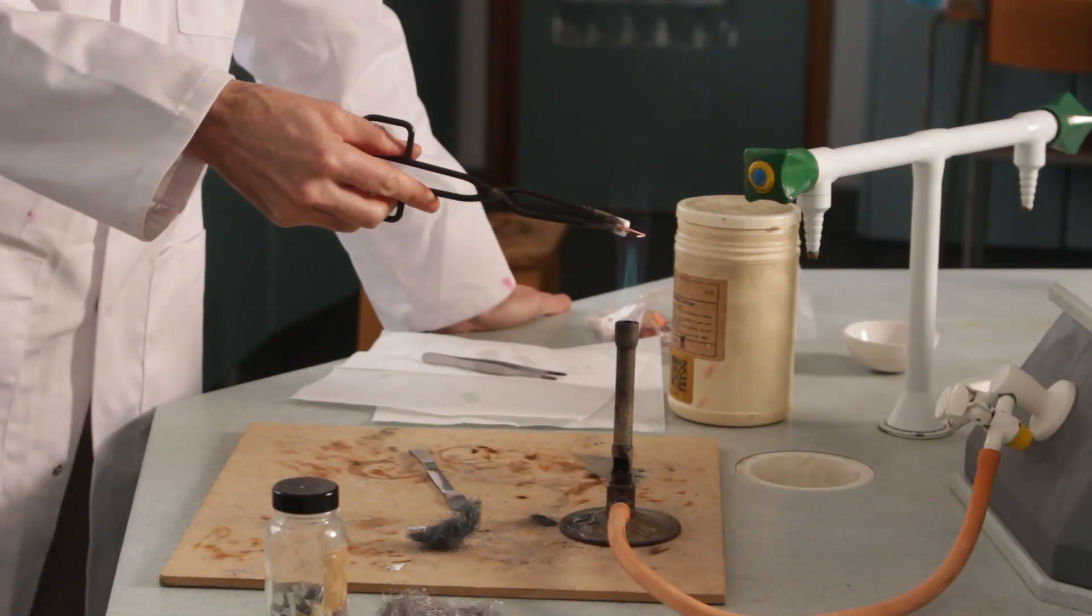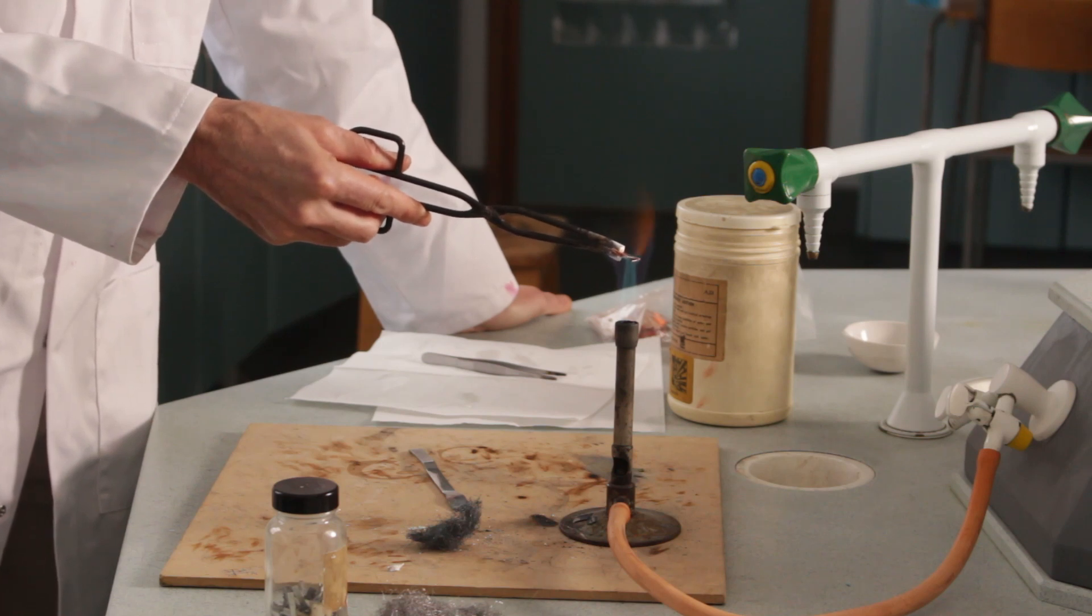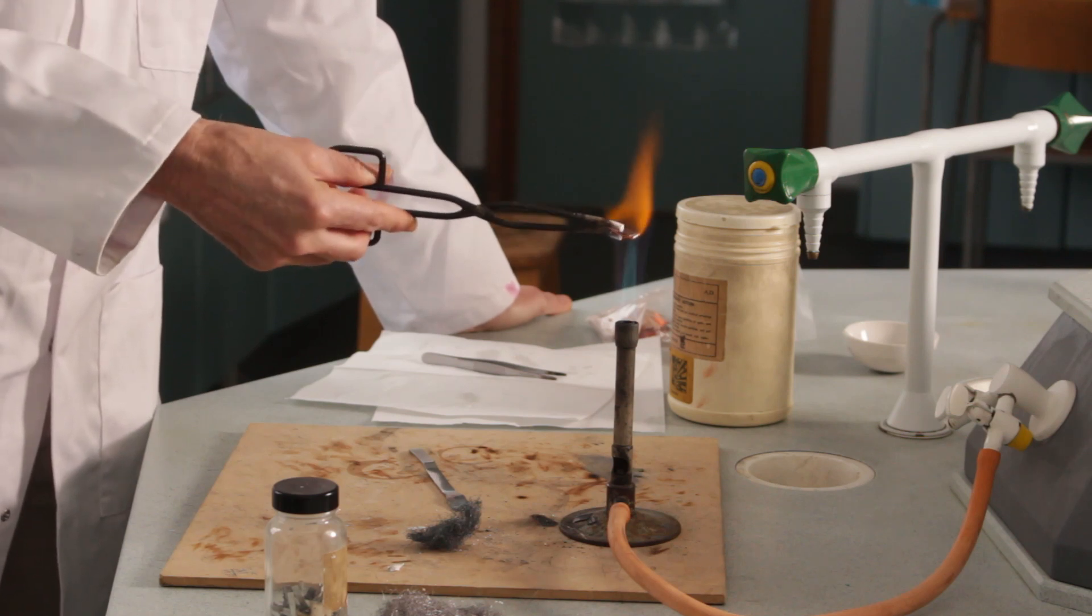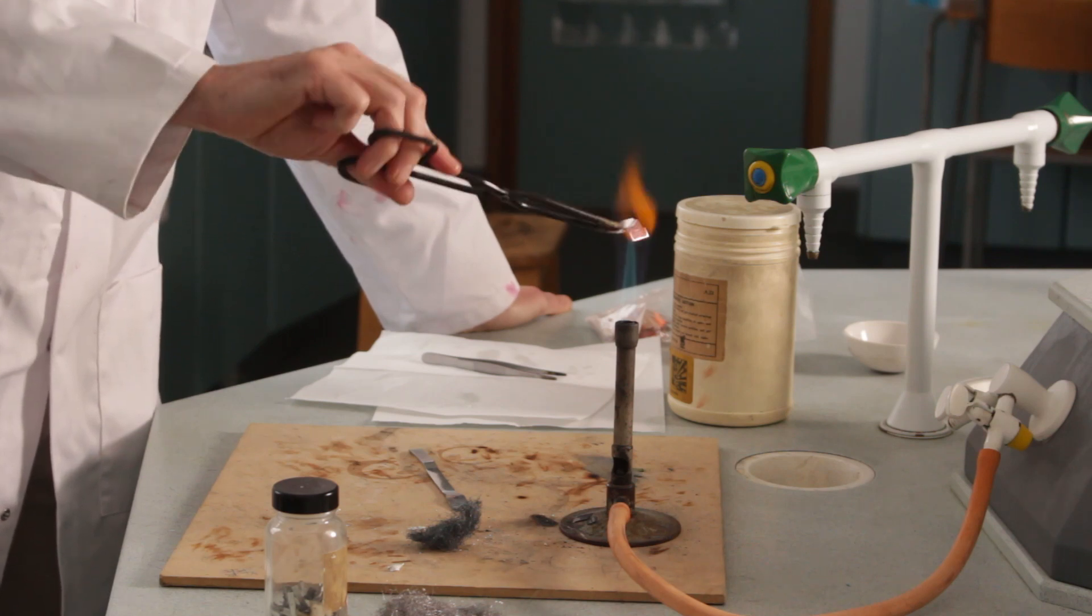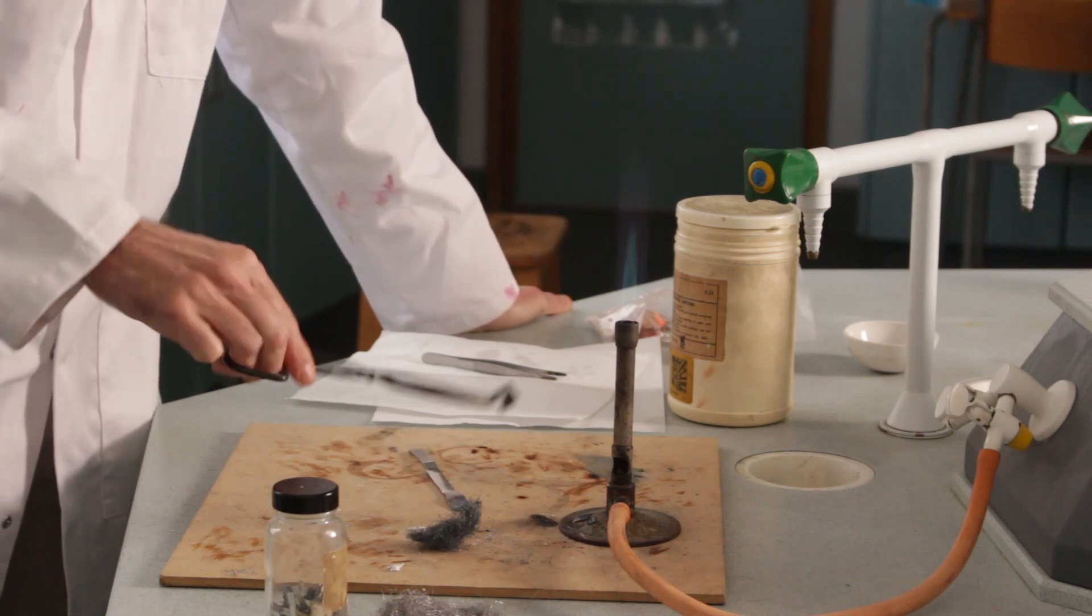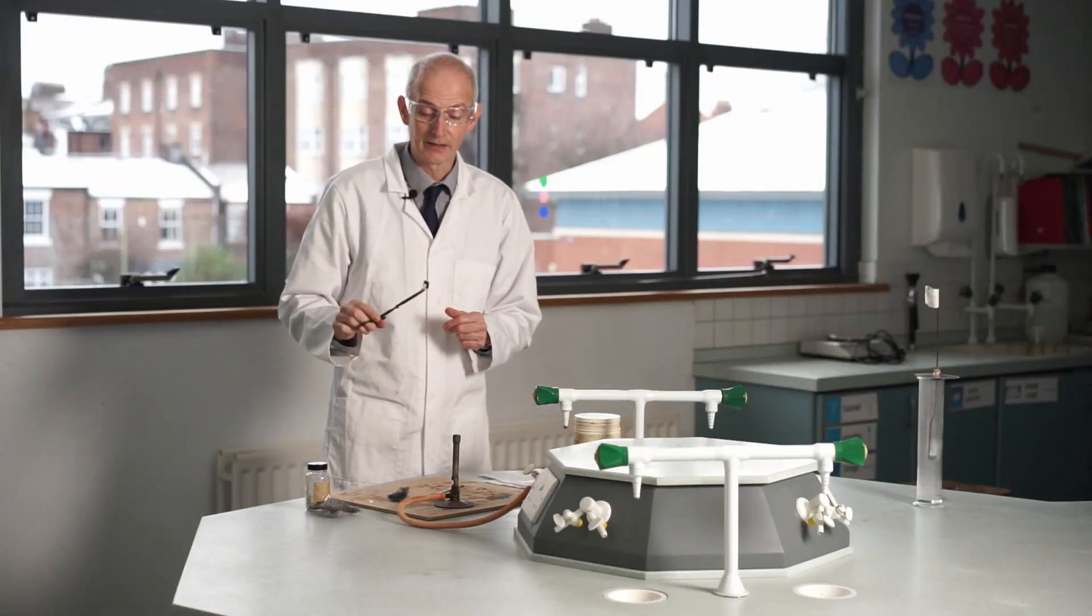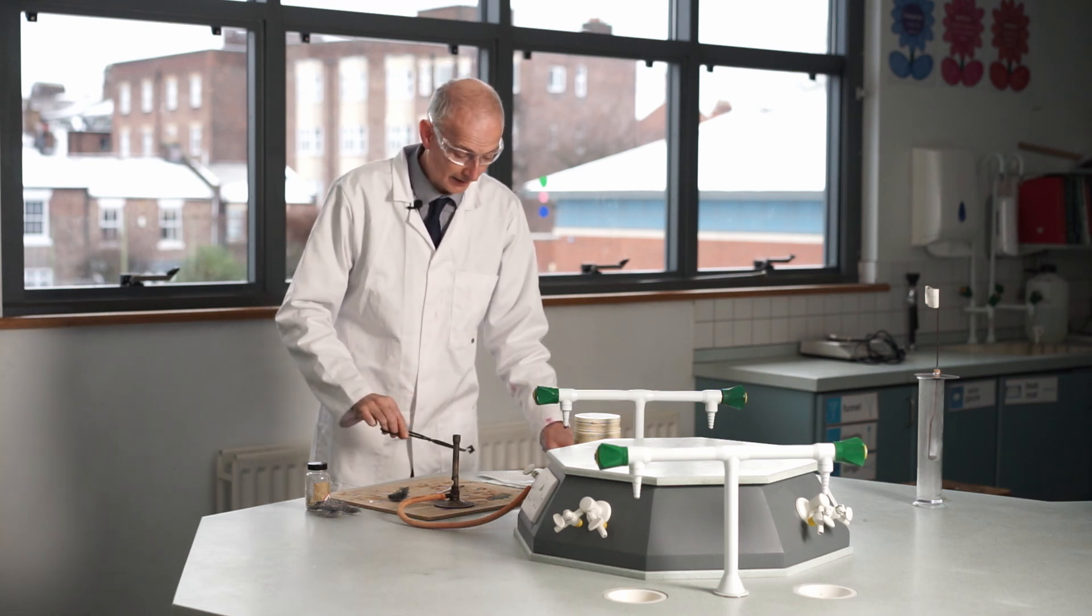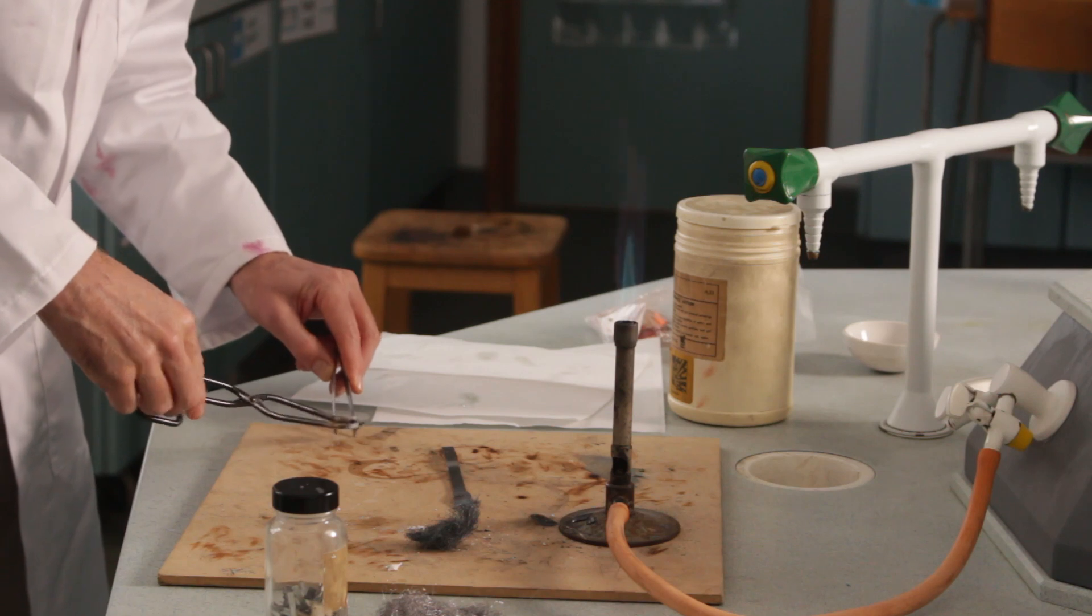I'm going to heat this really strongly, and we know what's going to happen on the outside of it. It's starting to discolor already, just starting to turn black on the outside as I heat it up. I've done what I wanted to on the outside—I've turned it black. But what about on the inside where no air could get to it? Is that going to stop the reaction? I'm going to cool it down a little bit and then open it up and see if I can look inside this little parcel.